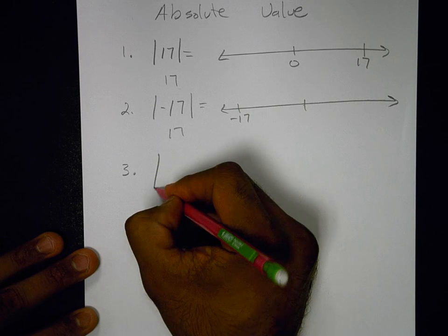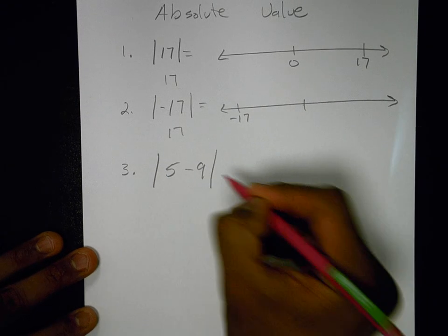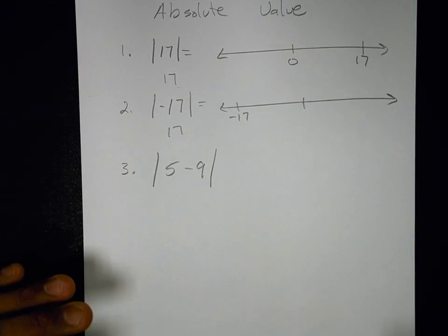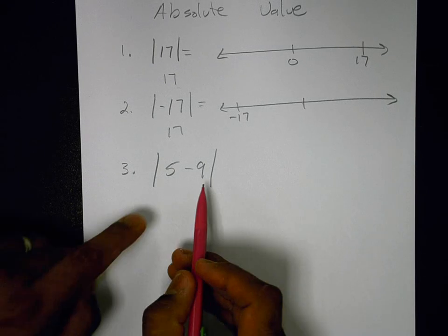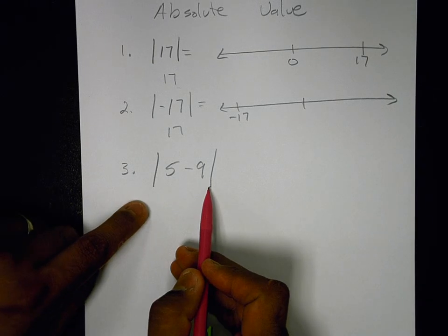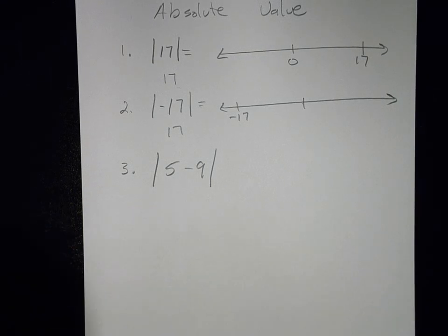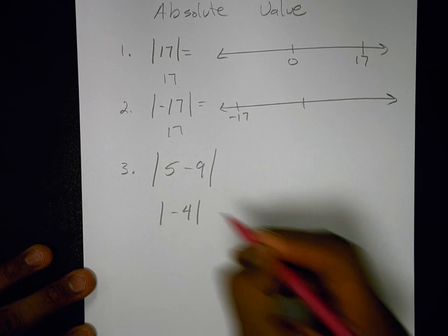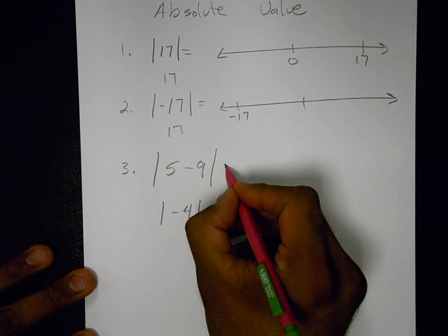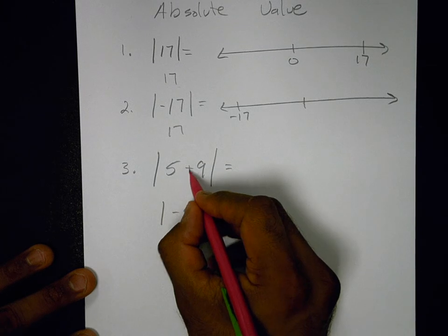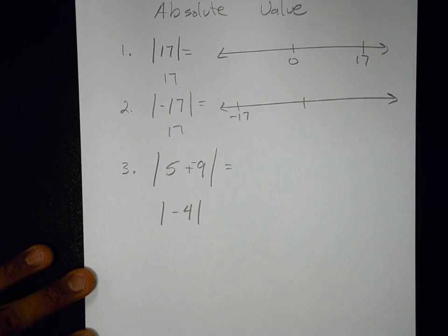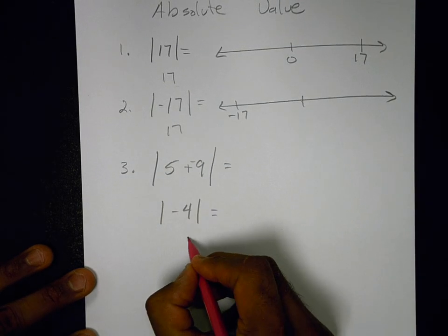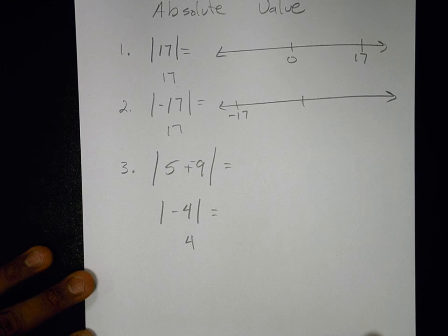Now what happens when we get some operations in there? Once again, nothing turns positive. So I'm going to simplify inside the absolute value symbols, and then when I'm all done, I'll measure how far that is from 0. So this gives negative 4, because 5 minus 9, right? And how far is negative 4 from 0? 4 spaces. So the answer is 4.